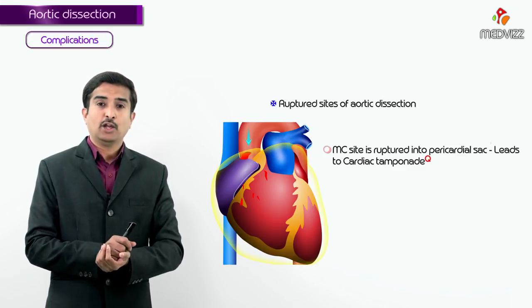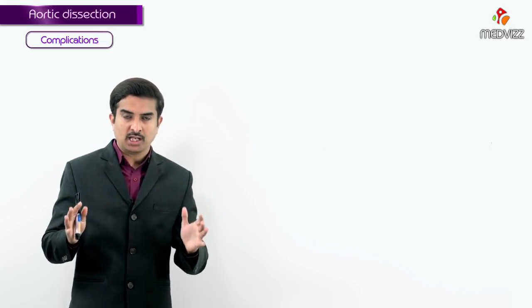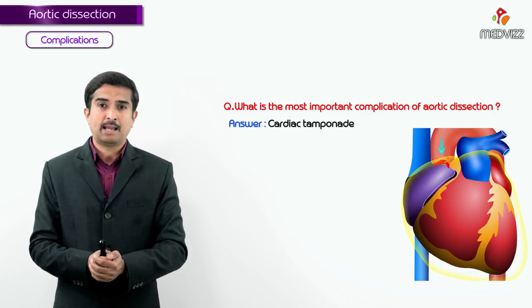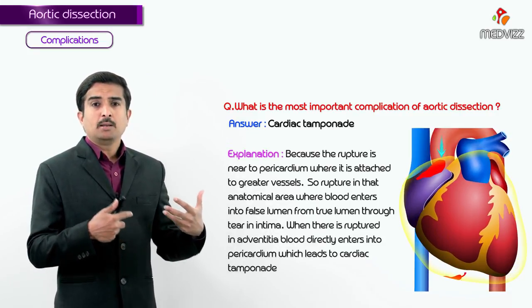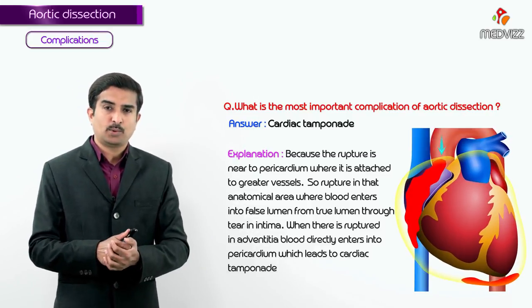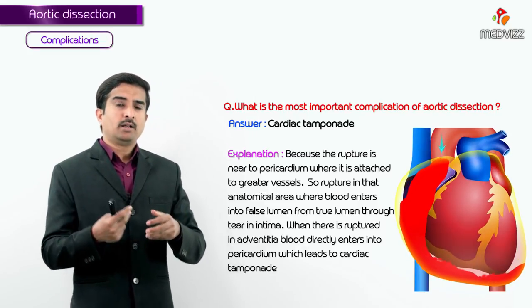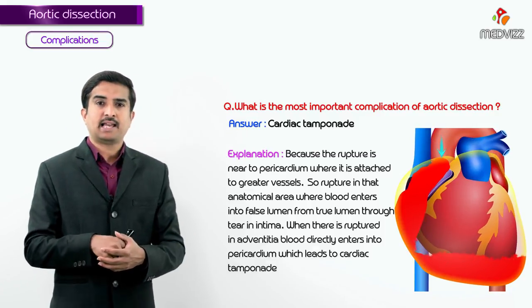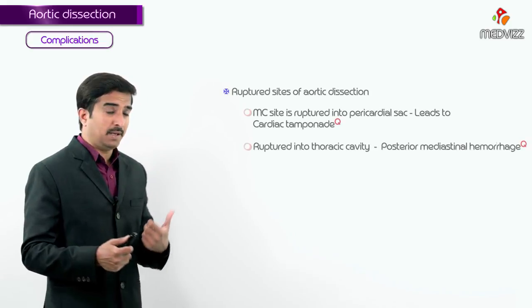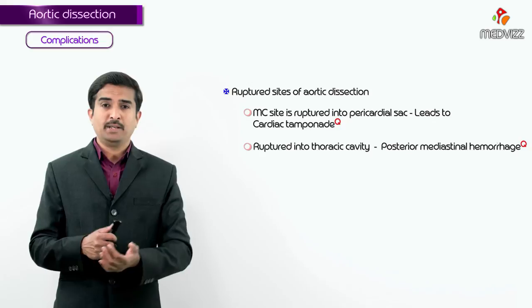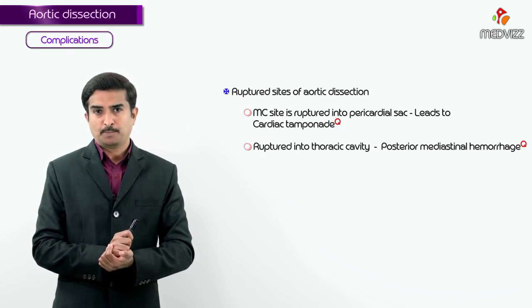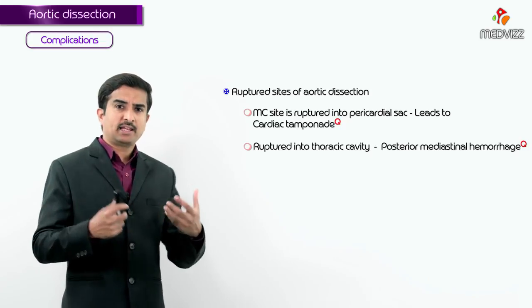The most common rupture site in aortic dissection is the pericardial sac, leading to cardiac tamponade. In the exam, if asked the most important complication of aortic dissection, your answer should be cardiac tamponade. Other sites include the thoracic aorta, where rupture causes hemorrhage into the mediastinum — more commonly the posterior mediastinum.